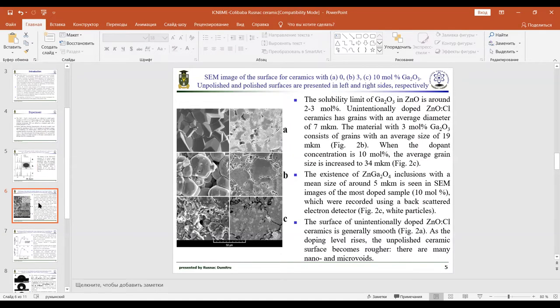The solubility limit of gallium oxide in zinc oxide is around two to three mole percent. Unintentionally doped zinc oxide chloride ceramics has a grain with average diameter of seven micrometers.